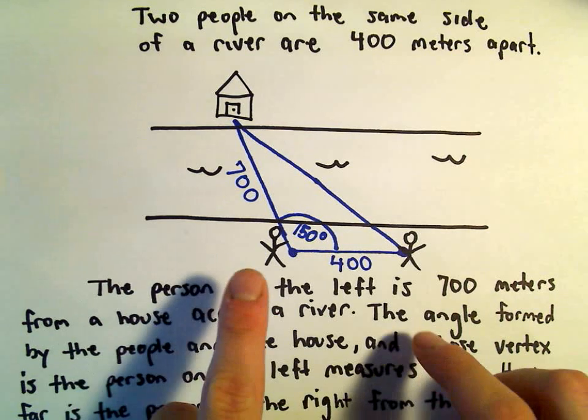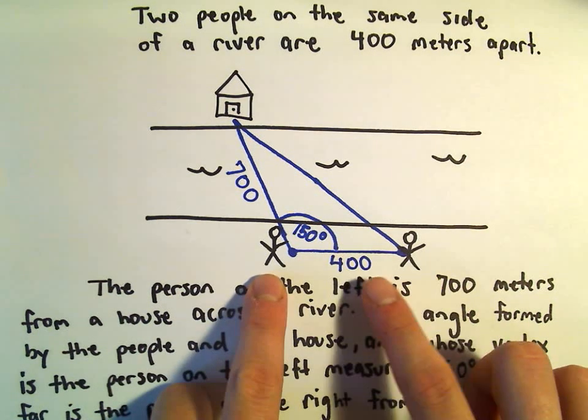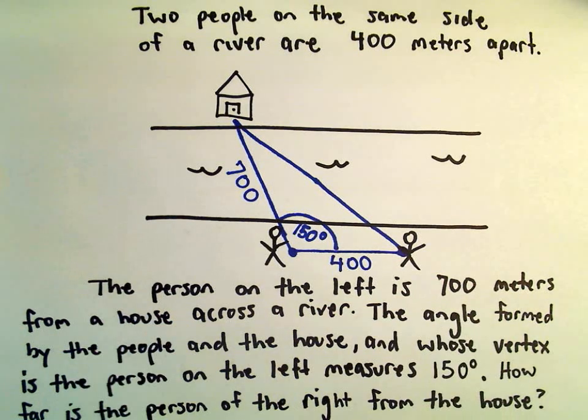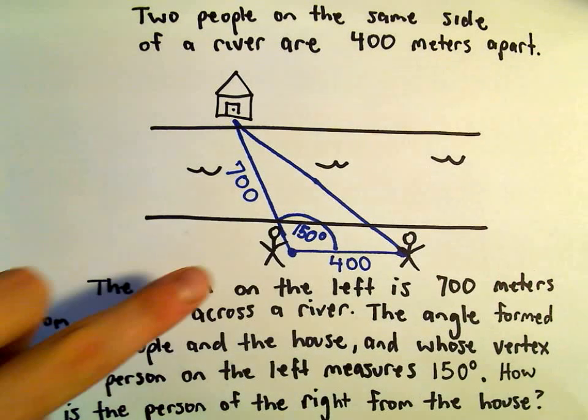The idea is we've got two people, they're on the same side of the river, and they're 400 meters apart.